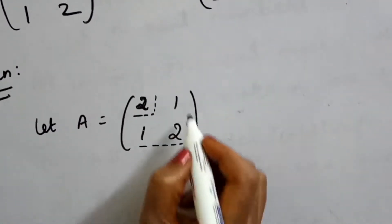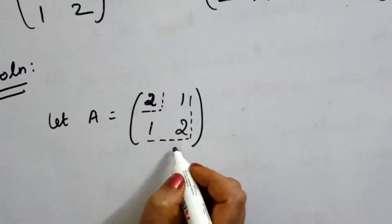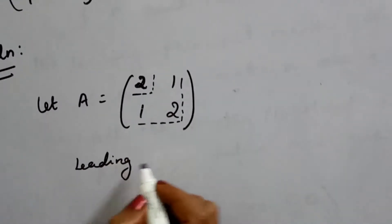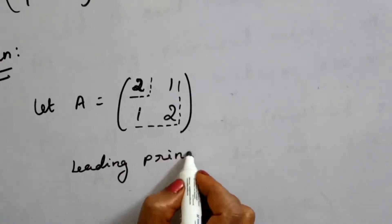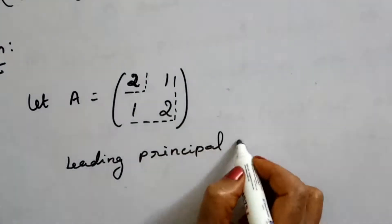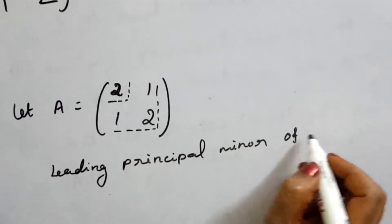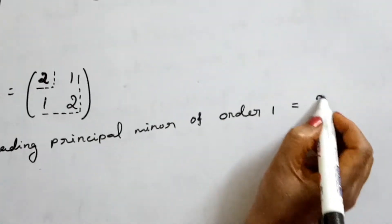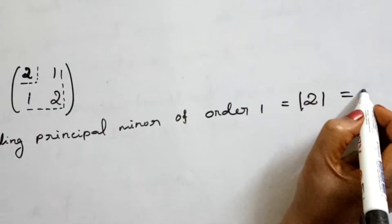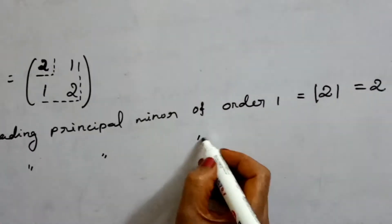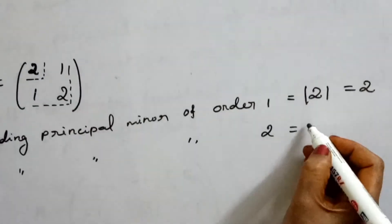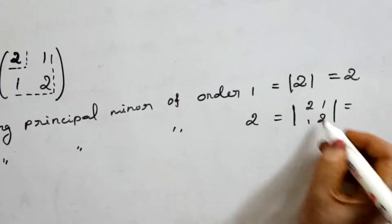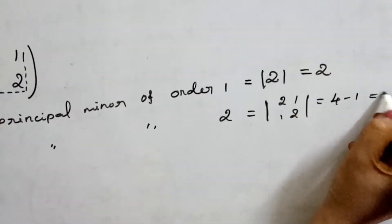The leading principal minor of order 1 is the determinant of [2], which is equal to 2. The leading principal minor of order 2 is the determinant of the whole matrix: det([[2, 1], [1, 2]]) = 4 minus 1 = 3.